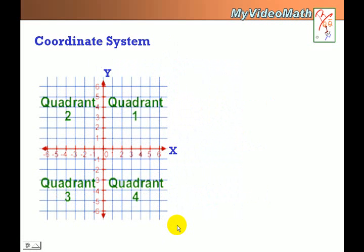The coordinate system, again, x-axis, y-axis, origin, quadrant 1, quadrant 2, quadrant 3, and quadrant 4.